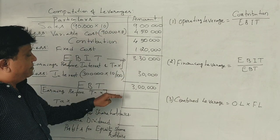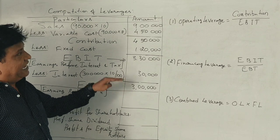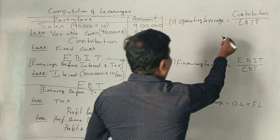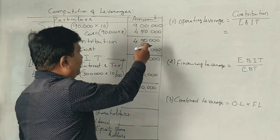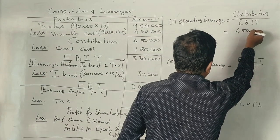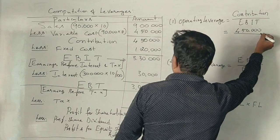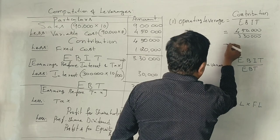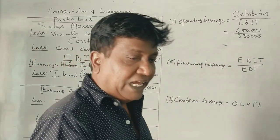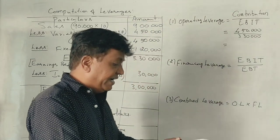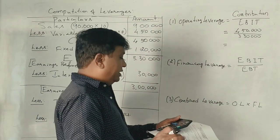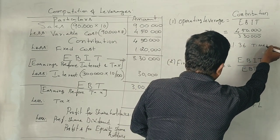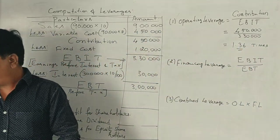Now can we calculate operating, financing and combined leverage? Yes. The formula for operating leverage is contribution divided by EBIT, which is Rs. 4,50,000 divided by Rs. 3,30,000. That equals 45 divided by 33, which comes to 1.36 times.